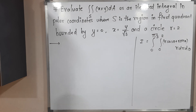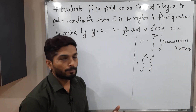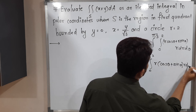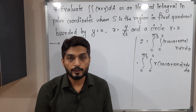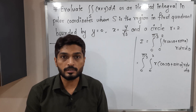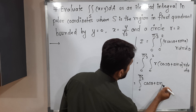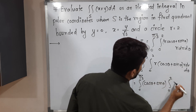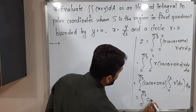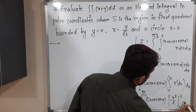Simplifying: this equals the integral from 0 to π/3, integral from 0 to 2, of r²(cos θ + sin θ) dr dθ. Taking (cos θ + sin θ) outside the inner integral since it has no r, we get the integral from 0 to π/3 of (cos θ + sin θ) times the integral from 0 to 2 of r² dr, dθ. The inner integration gives r³/3 evaluated from 0 to 2.